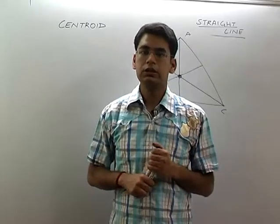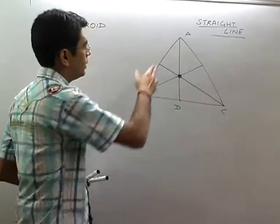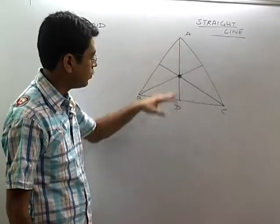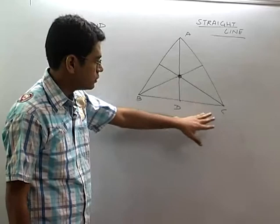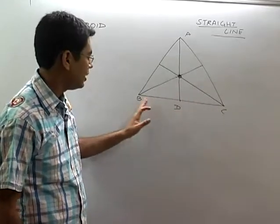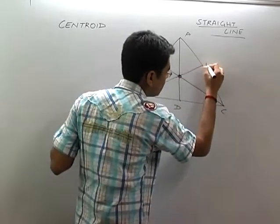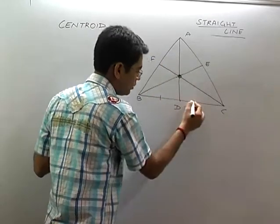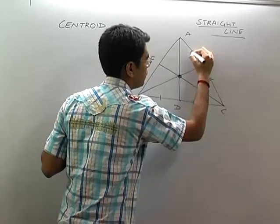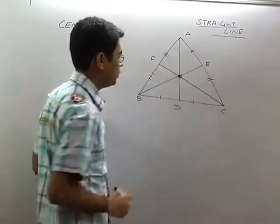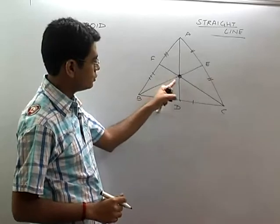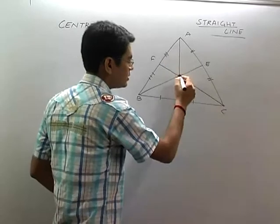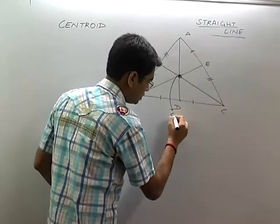What is centroid? If my triangle is A, B, C, then the centroid is formed when you join A with the middle point of the opposite side — just like D. Similarly, B is joined with E, and C is joined with F. So D, E, F are all middle points. The point where BE, CF, and AD intersect is known as the centroid.